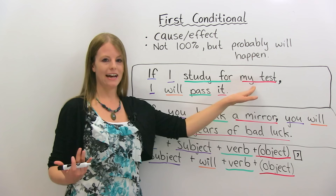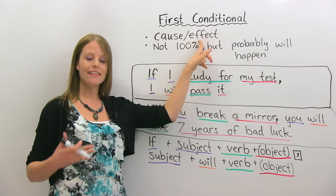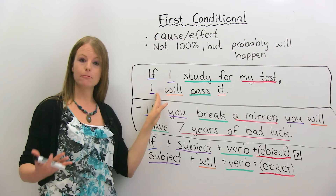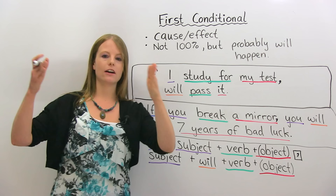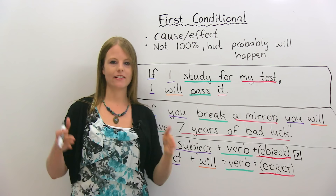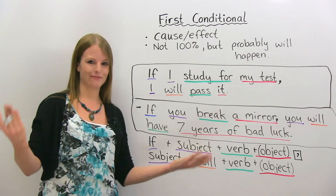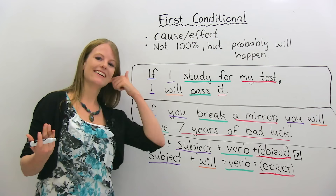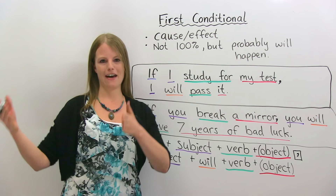First conditional sentences have two parts, and they reflect a cause-and-effect relationship. 'If I study for my test' — that's the first part, the cause. Then we have the second part, the effect: 'I will pass my test.' If you break a mirror — that's the cause. What happens? You will have seven years of bad luck — that's the effect. For someone more scientific, the effect might be: 'You will have to buy a new one.' So first conditionals always come in two parts: cause and effect.